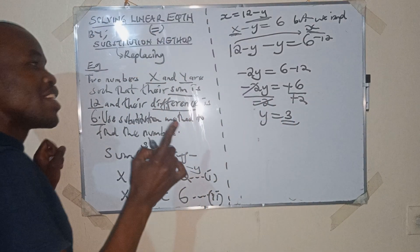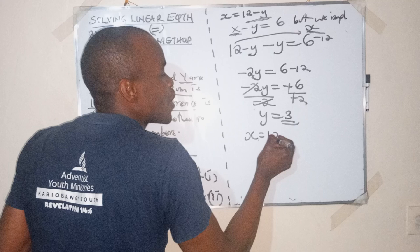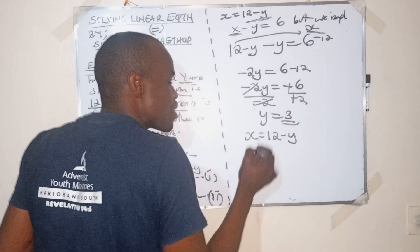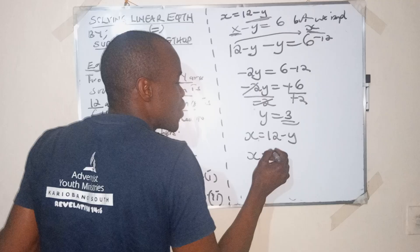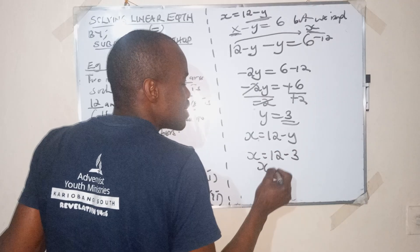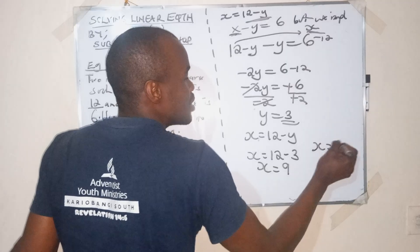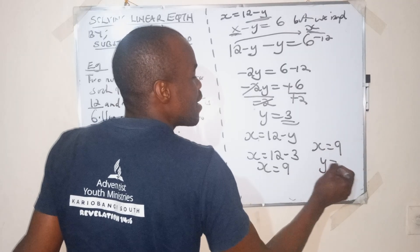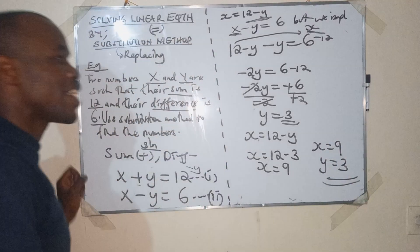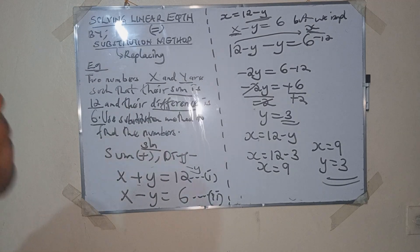y is equal to positive 3. Now, x is equal to 12 minus y, so we replace y with 3. x is equal to 12 minus 3, so x is equal to 9. Our x is 9 and our y is 3. Those are the values of x and y.